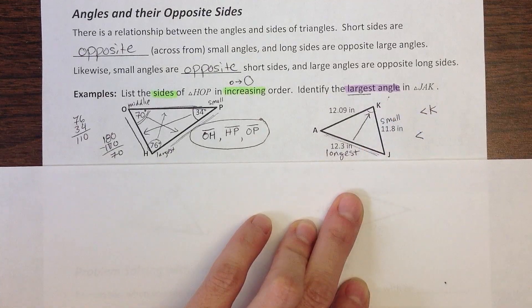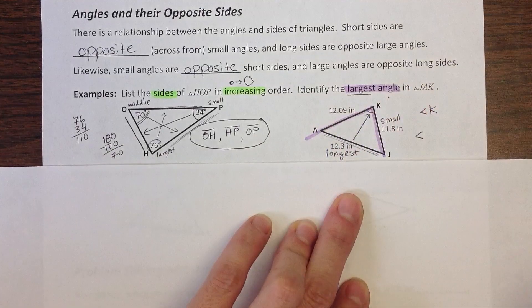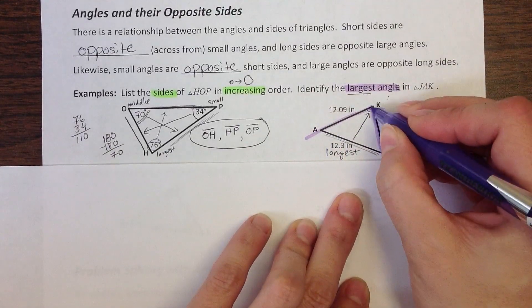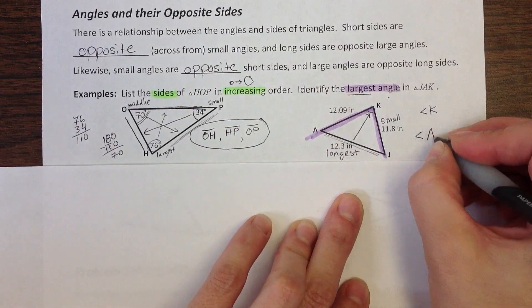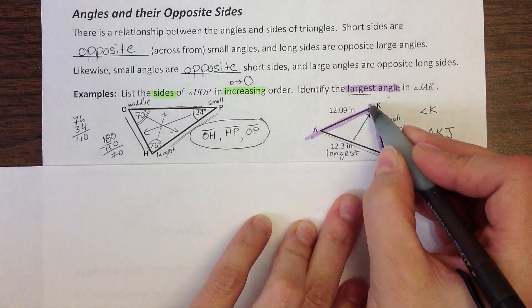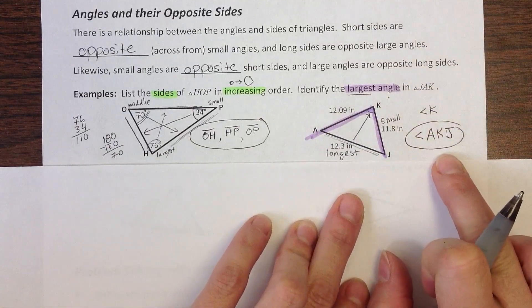So in other words, I could name this as angle AKJ or JKA. But what's important is that K has to be in the center. Okay, AKJ. So that's the largest angle named with three letters.